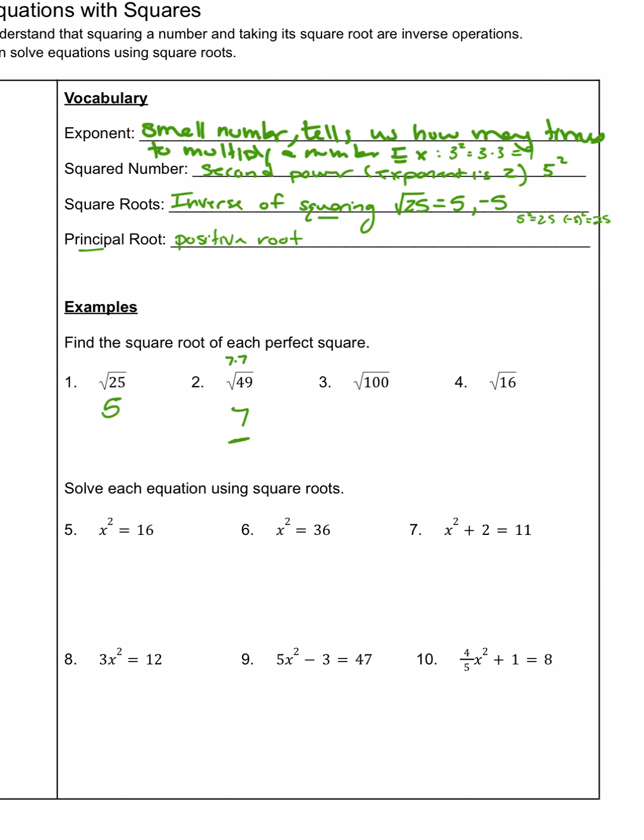So then number 3, what times itself is 100? That's going to be 10. 10 times 10 is 100. And on number 4, what times itself is 16, and that's 4. 4 times itself is 16.